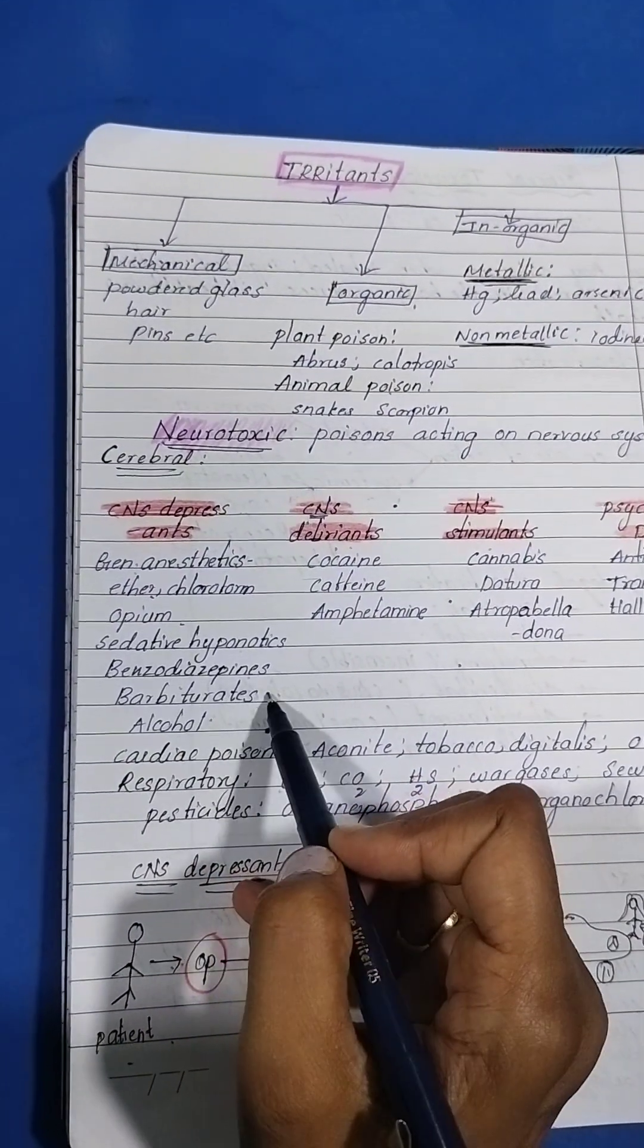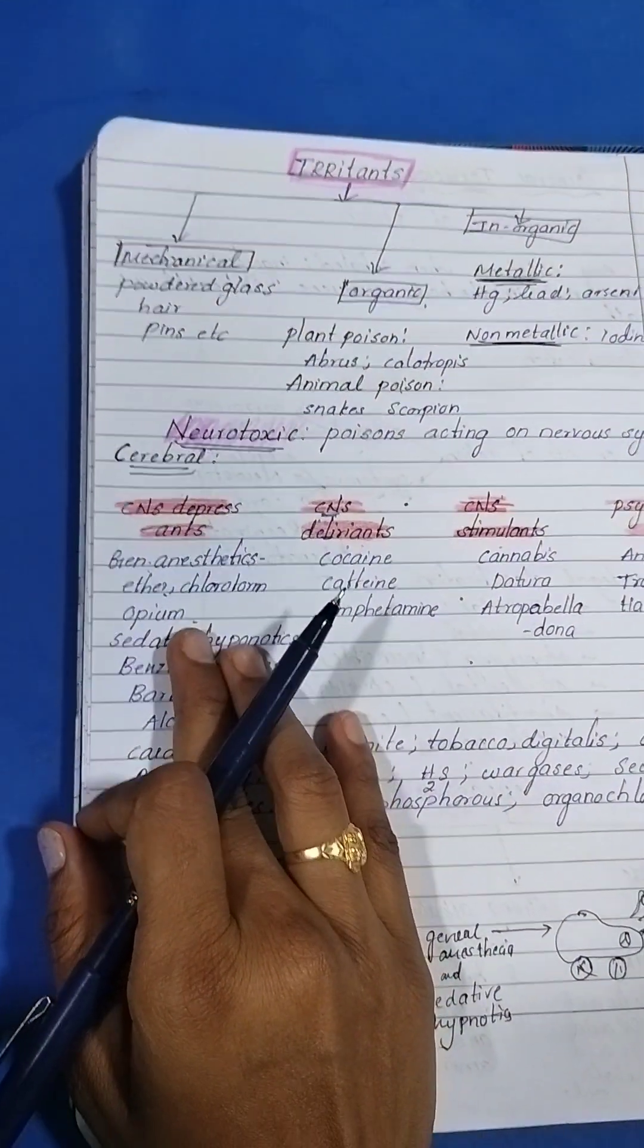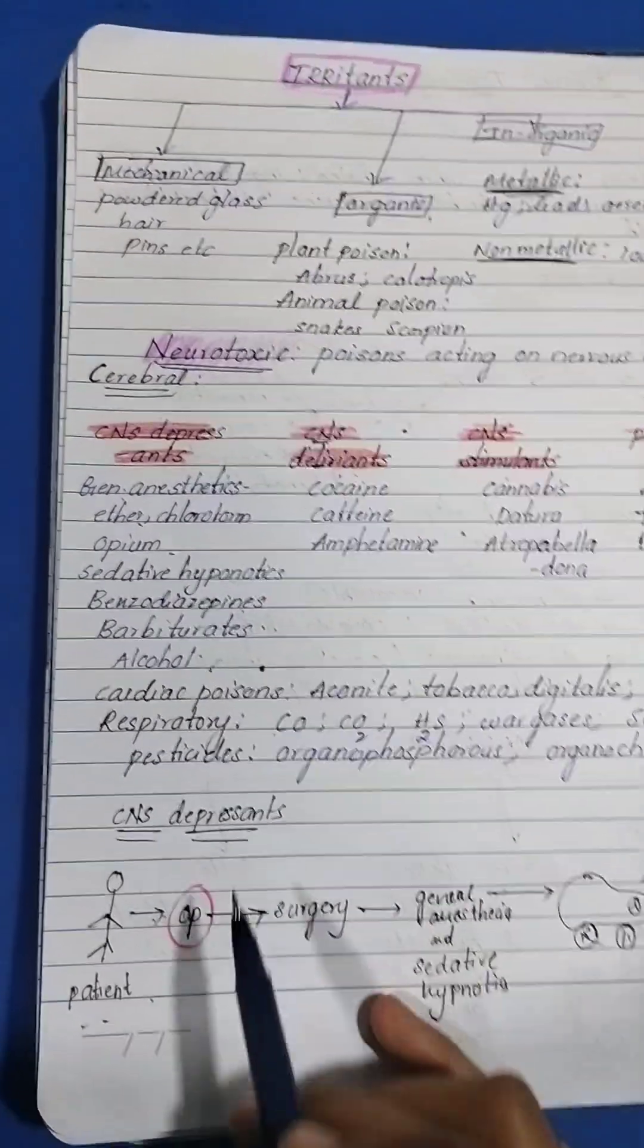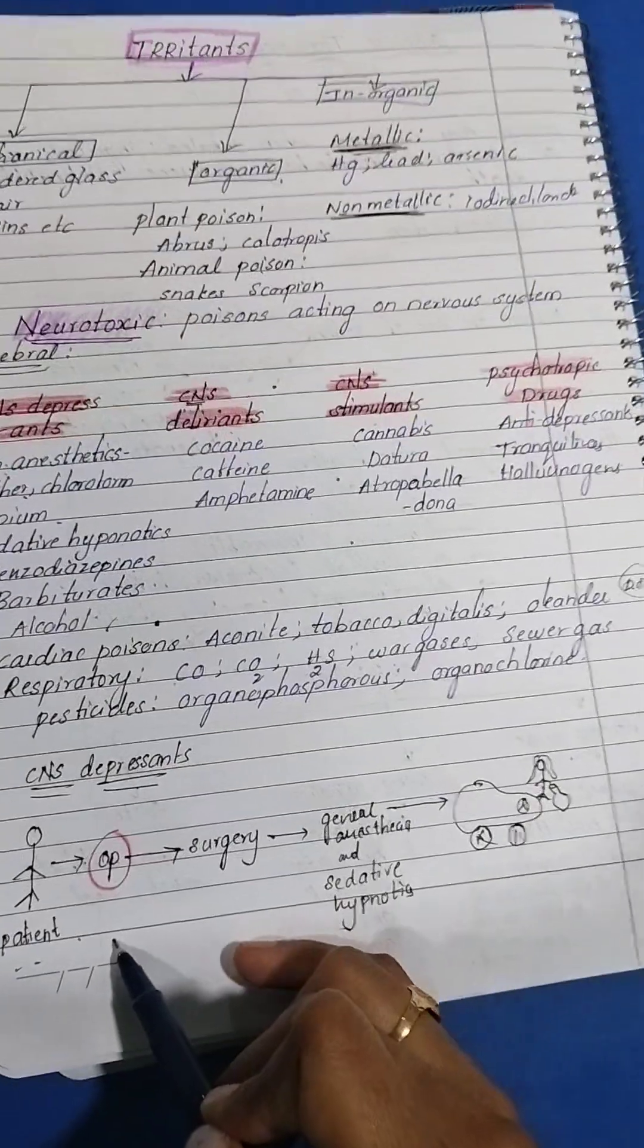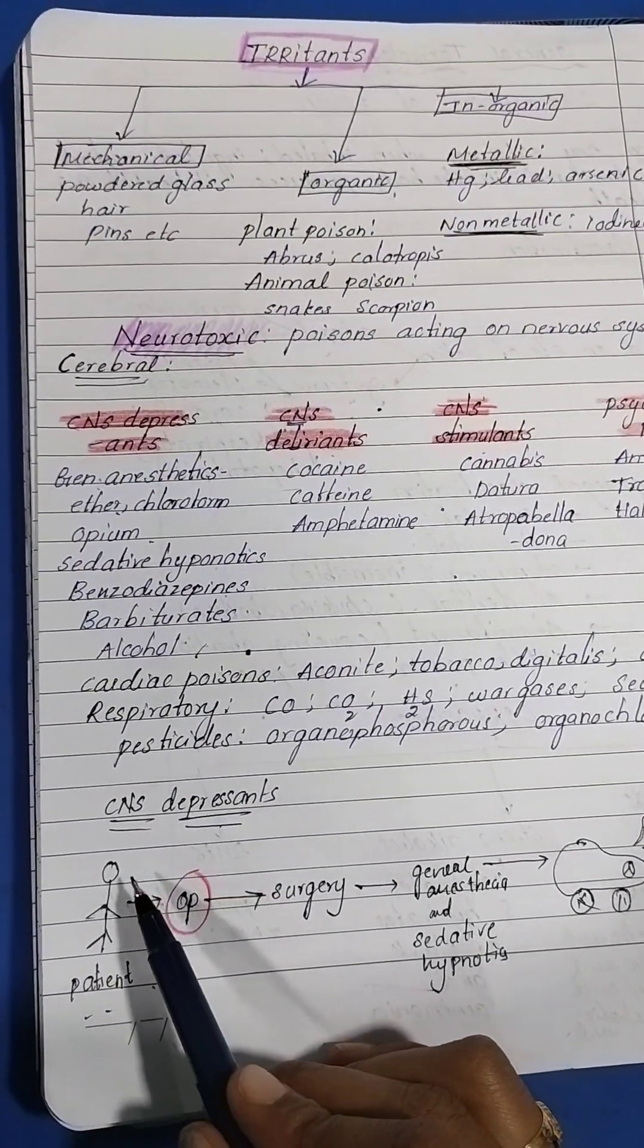benzodiazepines, barbiturates, alcohol. I just made a mnemonic to remember this. Just a simple story to remember CNS depressants. Let's think there's a patient who came for the operation.